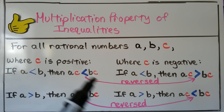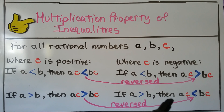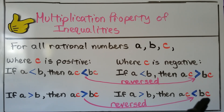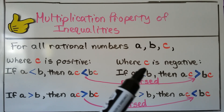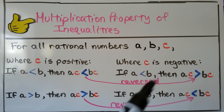See how the sign got reversed? When c is negative, if a is greater than b, then a times c will be less than b times c — it got reversed again. So whether it's less than or greater than, when we multiply by a negative, we're going to reverse the symbol.